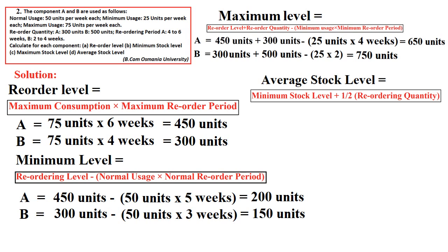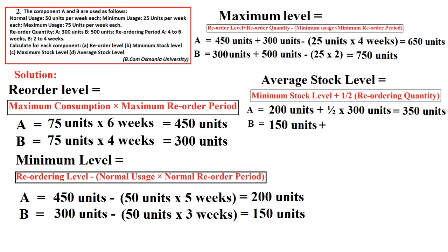For average stock level — formula: minimum stock level plus half of the reorder quantity. For A: 200 + (300 ÷ 2) = 350 units. For B: 150 + (500 ÷ 2) = 400 units. We calculate for both materials separately.